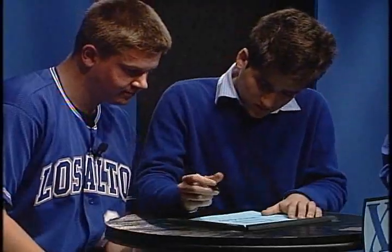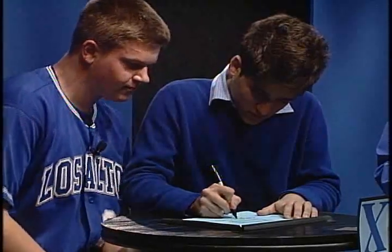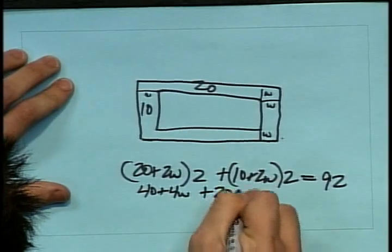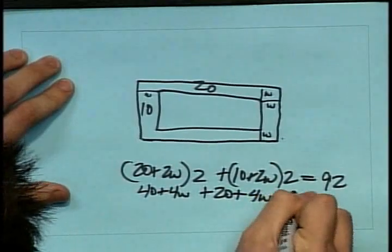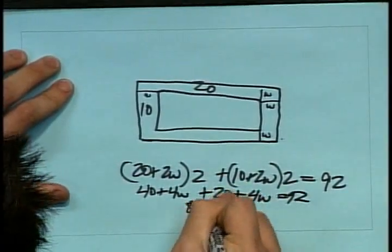They're using the perimeter formula for a rectangle, twice the width plus twice the length. 8W equals 32, W equals 4